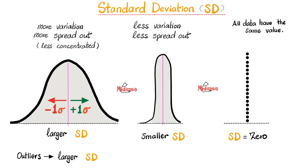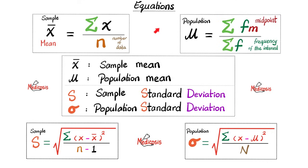But what if all the data points have the same value — for example, all of them are seven minutes? Then there will be no deviation whatsoever, and the standard deviation is zero. How about the variance? Also zero. In the previous videos, we mentioned that there is a difference between the mean for a sample and the mean for a population. Similarly, there is a difference between the standard deviation for the sample and the standard deviation for a population.